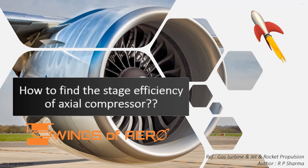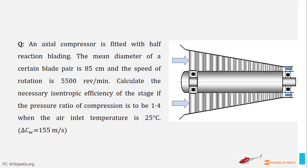Now, we are going to learn how to find the stage efficiency of axial compressor. Consider an axial compressor which is fitted with half-reaction blading.